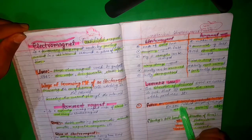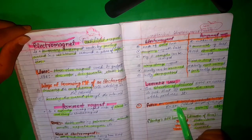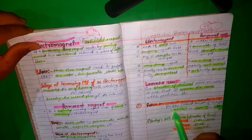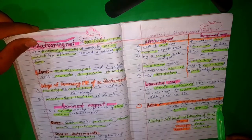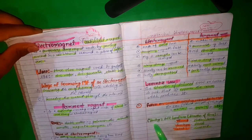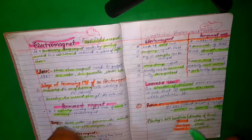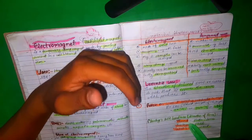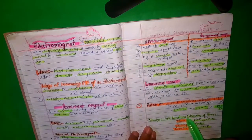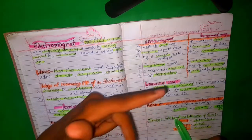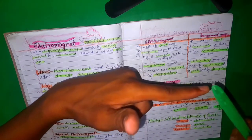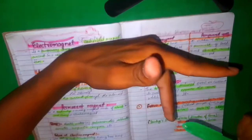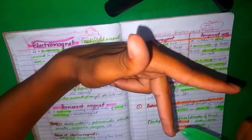Force on a current-carrying conductor in a magnetic field — the magnitude of the force is F = BIL, where I is the current, B is the strength of the magnetic field, and L is the length. The unit of B is newton per ampere per meter, or tesla, or weber per meter squared. To find the direction of the force on a current-carrying conductor, we use Fleming's left-hand rule — not the thumb rule.